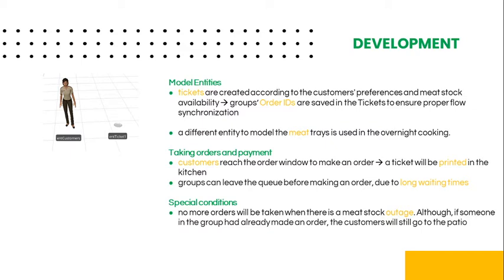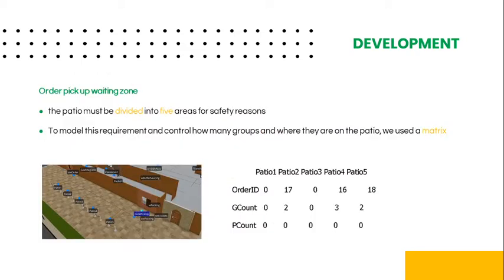The group can leave the queue before making an order due to long waiting times. When there is a meat stock outage, no more orders will be taken. However, if someone in the group had already made an order, the customers will still move to the patio. To follow current safety regulations, the patio must be divided into five individual areas. In order to model this requirement and control how many groups and their placement in the patio, we've developed a matrix.